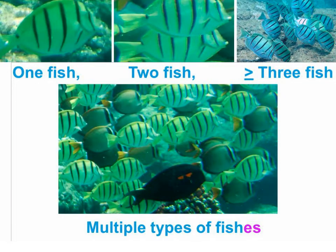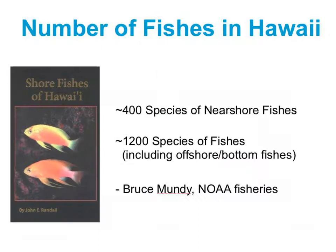Before we go any further, we should talk about the difference between fish and fishes. As you heard in grade school, the word fish can be used for a single individual or multiple individuals — one fish, two fish, many fish. On the other hand, if those fish involve more than one species, we use the term fishes. If you look at the photo below, you can see at least three different species, so collectively these are fishes.